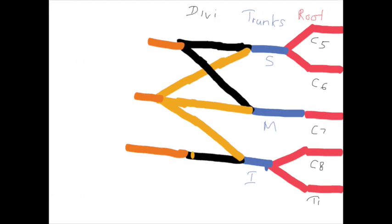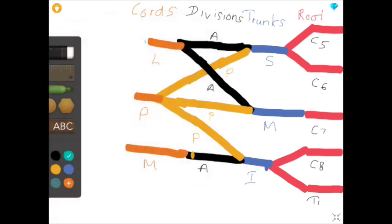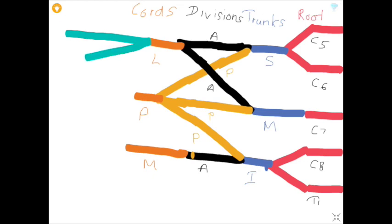Now I am labeling the divisions and the cords. The next part of the brachial plexus is terminal branches. From the lateral cord there are two terminal branches: musculocutaneous nerve and the lateral root of the median nerve.